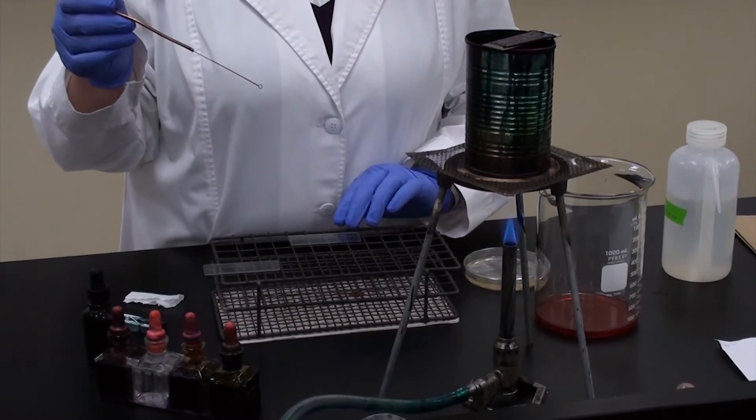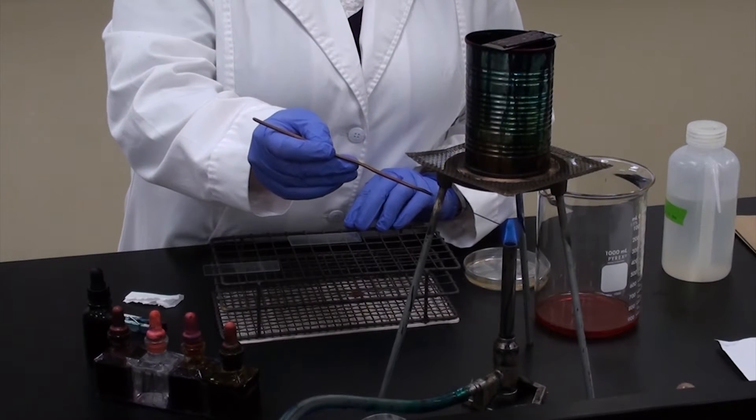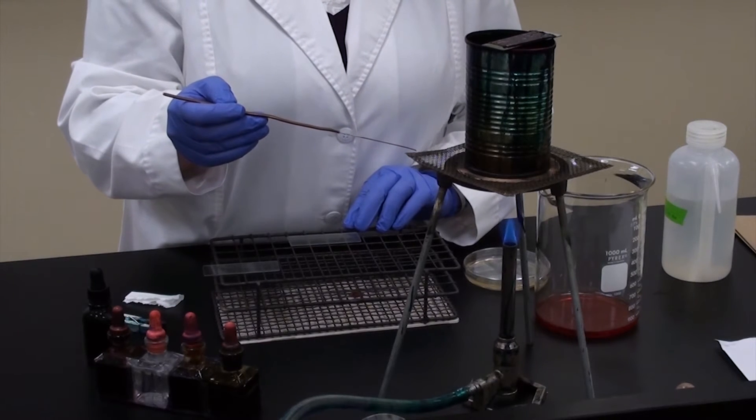The first part of completing an endospore stain is just like doing a simple stain. First, we're going to heat fix bacteria to the slide. If you remember correctly, I'm going to heat my loop and let it cool for a short amount of time.